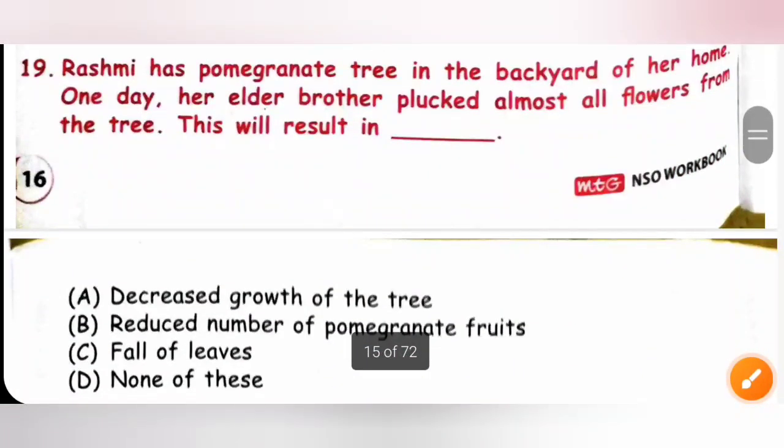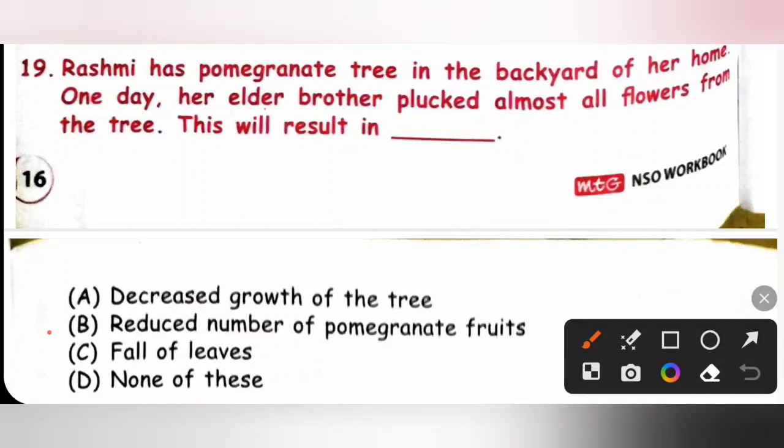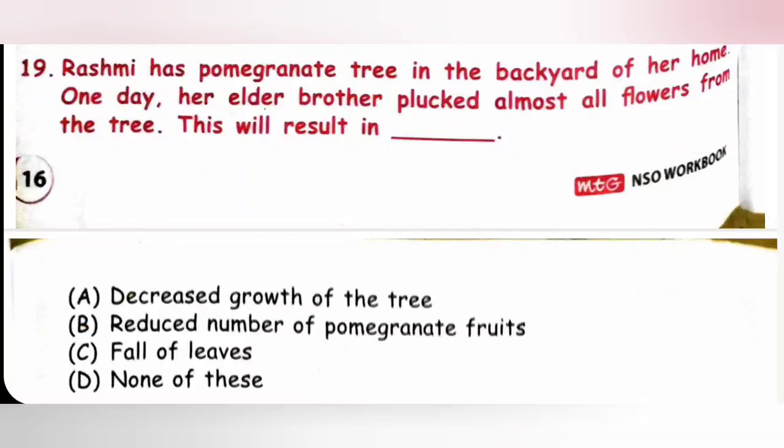Nineteenth, Rashmi has pomegranate tree in the backyard of her home. One day, her elder brother plucked almost all flowers from the tree. This will result in dash. We know flowers will grow into fruit. So if all the flowers of a tree are plucked, there would be no fruits. This will result in reduced number of pomegranate fruits. Option B is the correct answer.